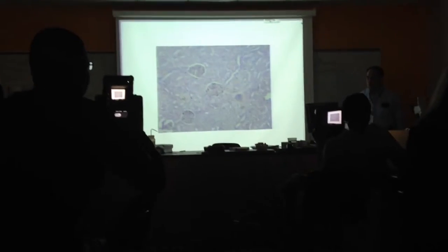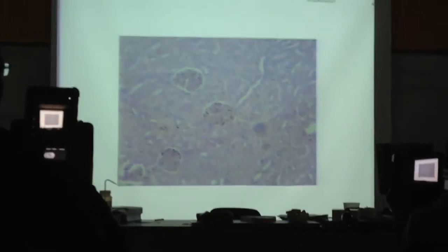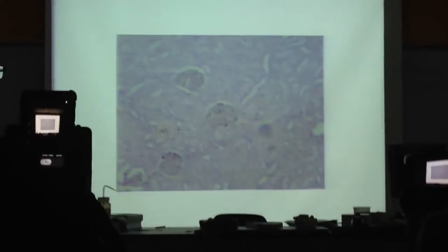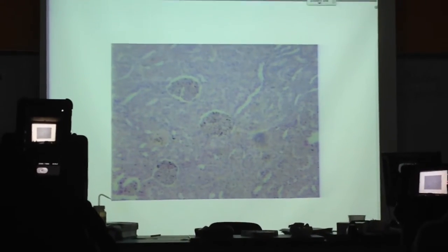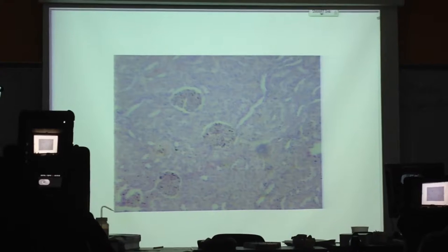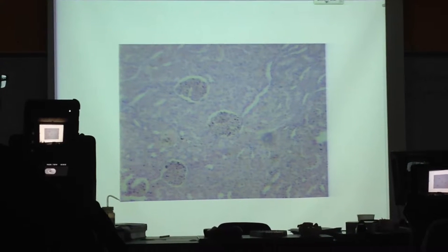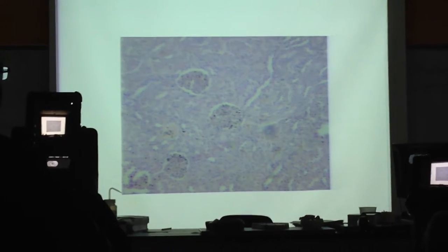Now, most of the renal tubule consists of simple cuboidal epithelium — simple cuboidal epithelium — but there are some exceptions.